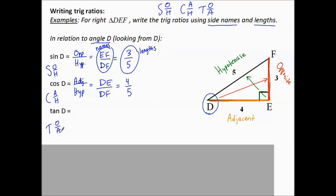Let's do tangent. TOA. So that's OA, opposite over adjacent. Opposite says this side, EF. And adjacent says this side, DE. That's the ratio of the sides looking from angle D. The numbers are 3 and 4, 3 over 4.